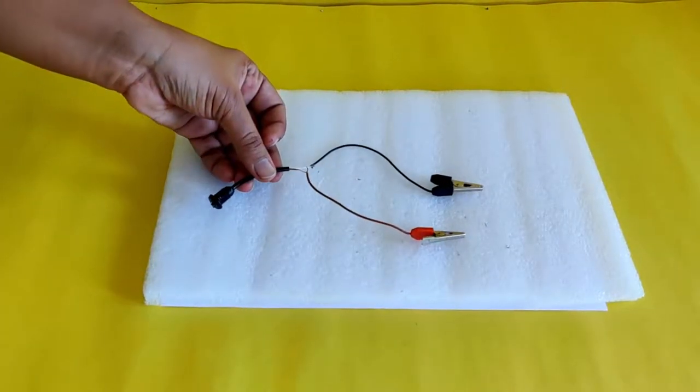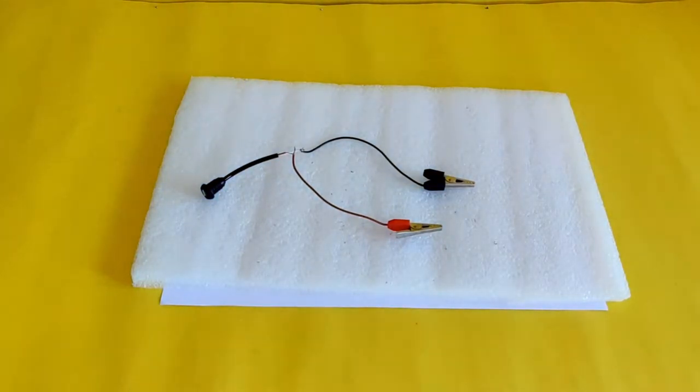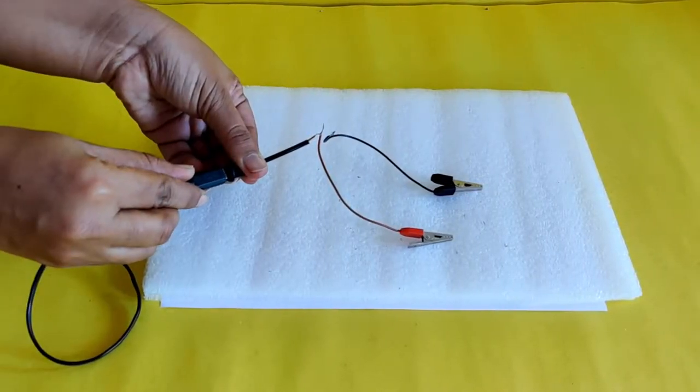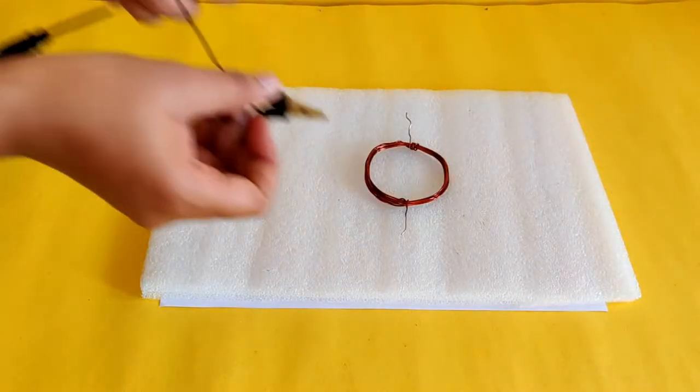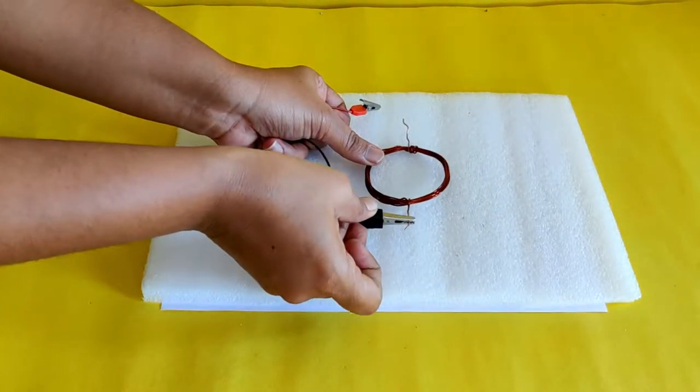Connect the micro USB female pin to the crocodile clips and insert the male pin from the mobile charger into the female pin. Attach the crocodile clips to the two ends of the coil.